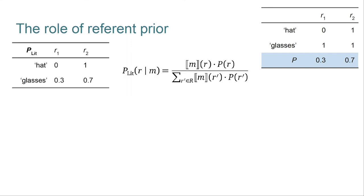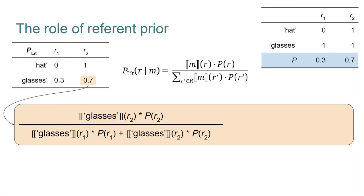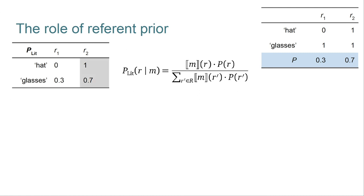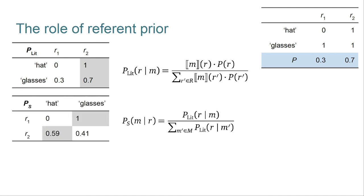With priors, the literal listener is changed, in that we now reason both about the truth conditions and about this referent prior. The prior is just multiplied in. To make this concrete, suppose we want to calculate the probability of r2 given the message glasses. Then the P_lit calculation unpacks as in the orange box. We look up the truth conditions as before, and now we also look up the prior values. The calculations after that are simple. Notice that this means that the entire pragmatic process starts with a strong bias in favor of referring to r2, no matter what the message. As a result, the usual speaker bias for associating r2 and hat is smaller. Recall that this value used to be 0.67.